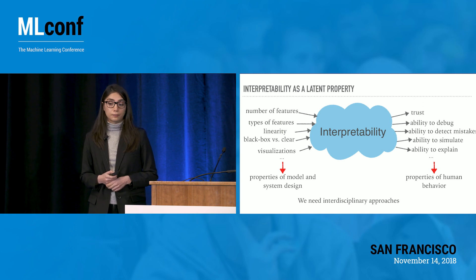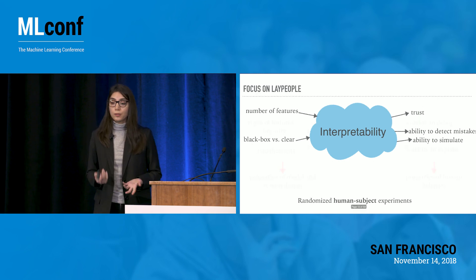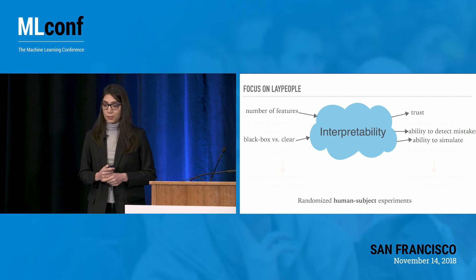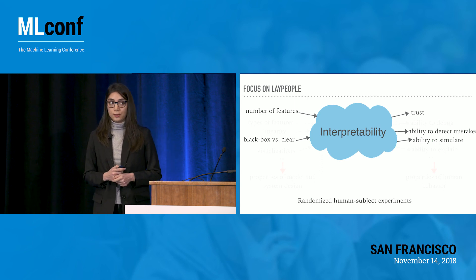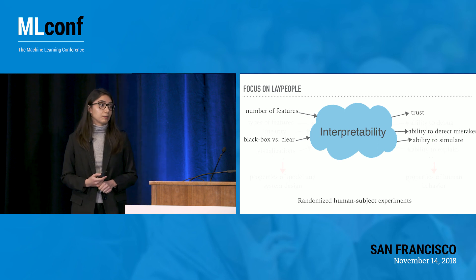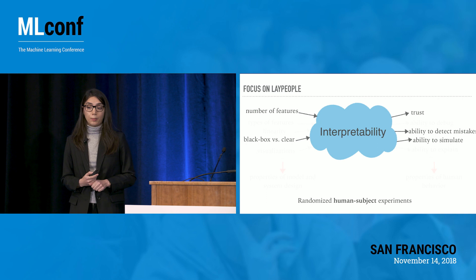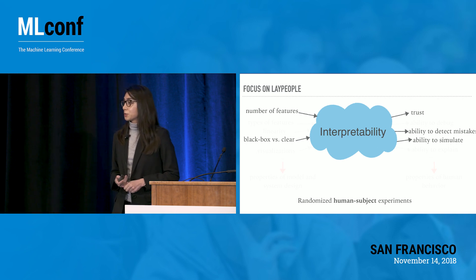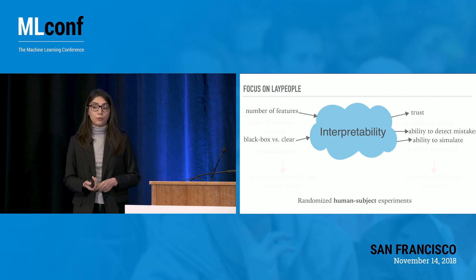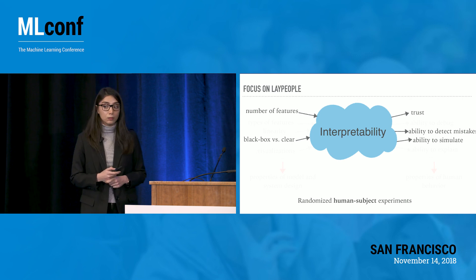We need to learn from amazing research from sociologists, psychologists, and decision-making researchers and apply similar methodologies to understand interpretability. So that's what we did. We particularly focused on two factors: the number of features the model uses and whether the model is clear or black box. We ran randomized human subject experiments on Amazon Mechanical Turk to measure the effect of those factors on people's abilities to gain trust in a model.